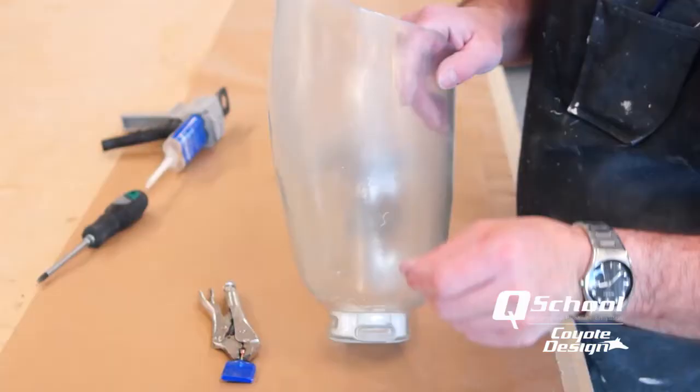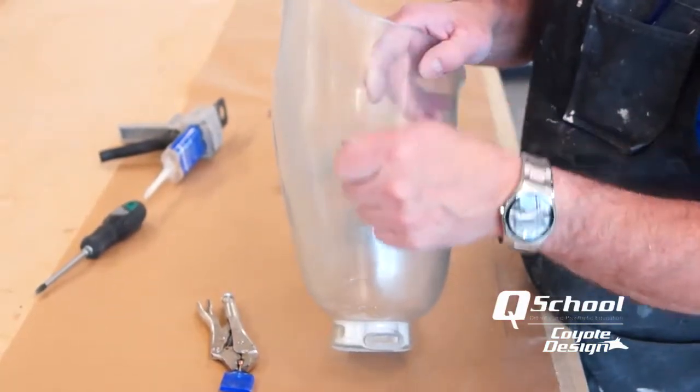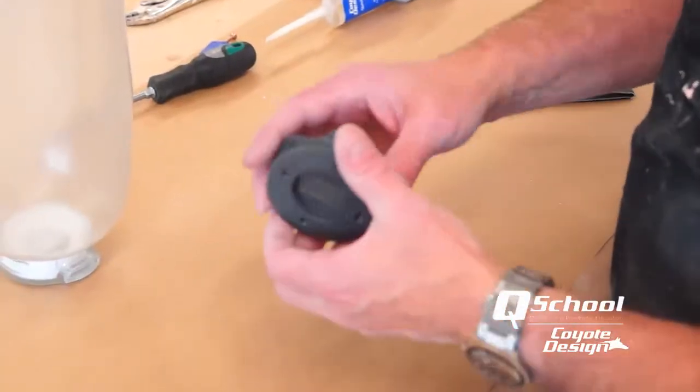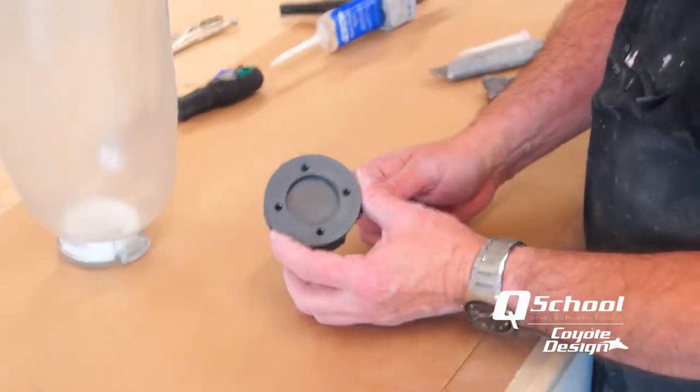So now we've got our exit hole, we're ready to take our lanyard and run it through and we'll find out where our spot goes for our chafe. But before we do that, let's get our test socket suction connector glued on.